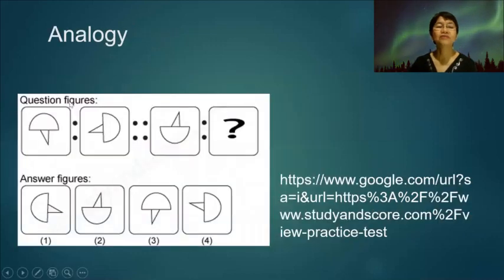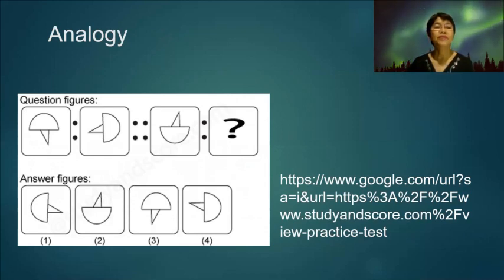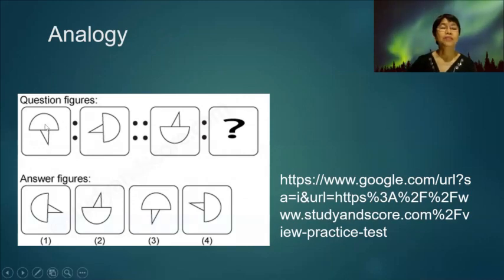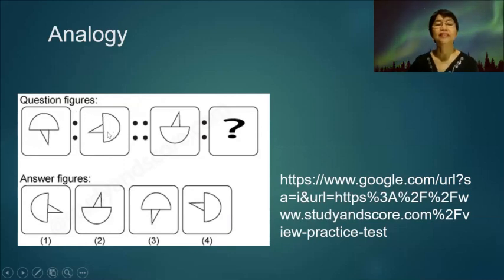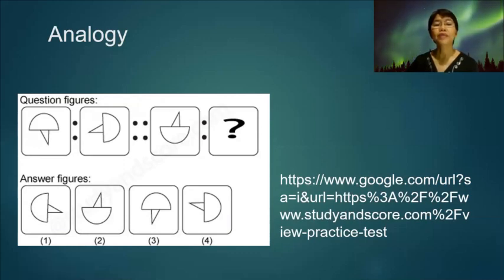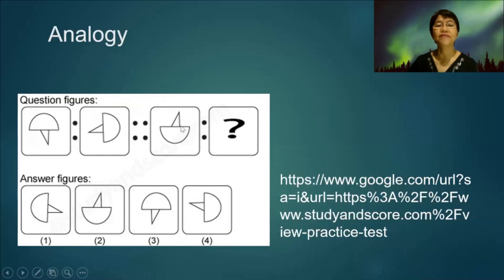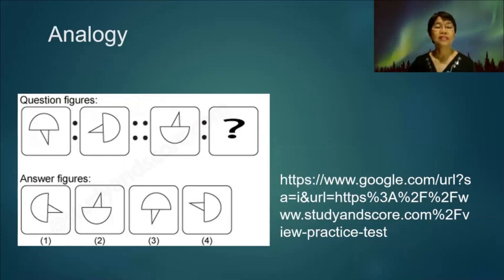Another analogy question: from the first figure to the second, there is a clockwise movement and a rotation of 90 degrees. It is being compared to the next pair, so we also expect a rotation of 90 degrees in the next figure. The answer is number one.